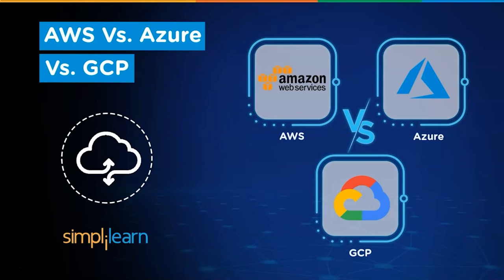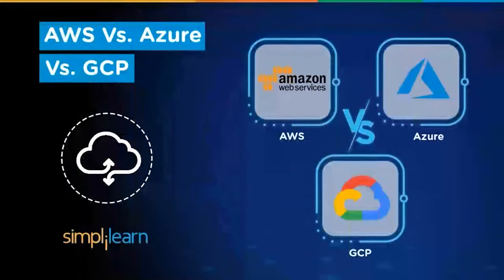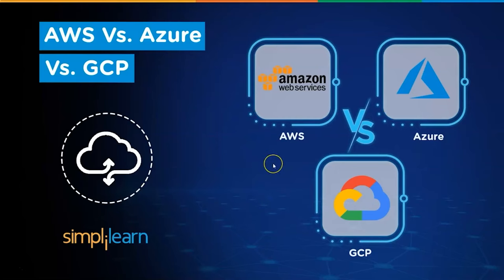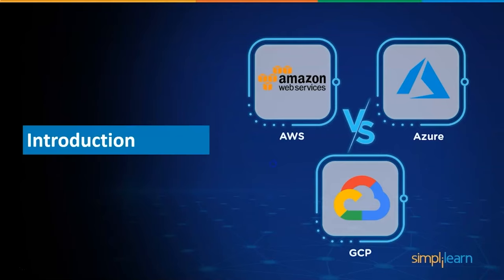In this video, we will compare and contrast AWS, Azure, and GCP based on a few related concepts around these cloud computing platforms. It will help us understand the functioning of these top cloud platforms and will also let us figure out the individuality of each one of them. But before starting with the comparison, let's have a quick introduction of AWS versus Azure versus GCP. So let's get started.